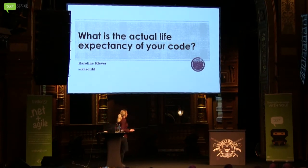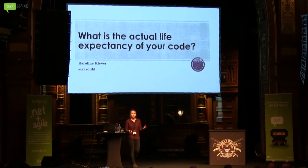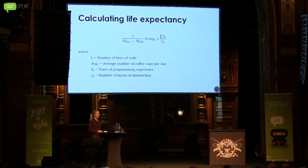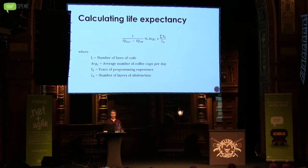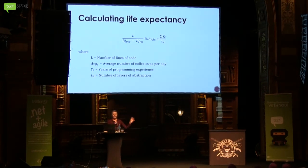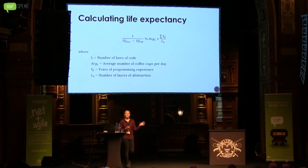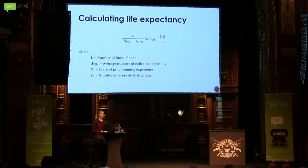Some of you, based on this title, might be expecting me to give you some absolute answer — what is your actual life expectancy of your code? So I'm going to give you a formula. If you take the number of lines of code in your code base and divide it by the IQ of the developer minus the IQ of the project manager, take that number and do a modulus of the average number of coffee cups you drink per day, then add the years of programming experience in your project team divided by the number of layers of abstraction in your code base — that gives you the life expectancy.